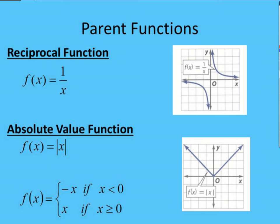The absolute value function, f(x) is equal to absolute value of x. You can also think of this as a piecewise function, where if x is less than 0, then you're going to use negative x. And if x is greater than or equal to 0, we use x.